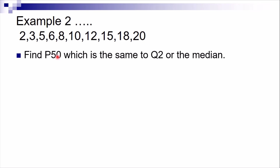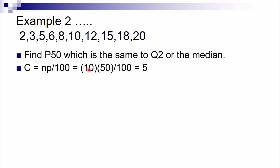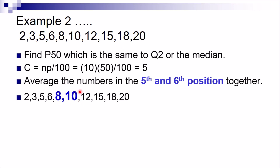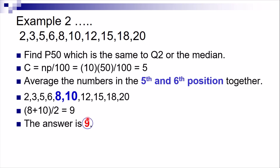Find P50, which is the same as Q2 or the median. c = 10 × 50 ÷ 100 = 5. Since 5 is a whole number, get the average of the 5th and 6th positions. The 5th value is 8 and the 6th is 10. Average = (8 + 10) ÷ 2 = 18 ÷ 2 = 9. Therefore P50 = Q2 = median = 9.